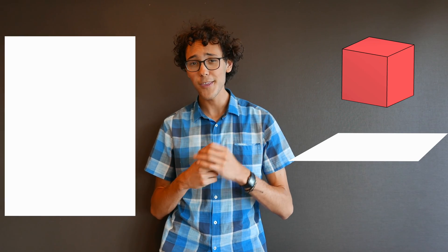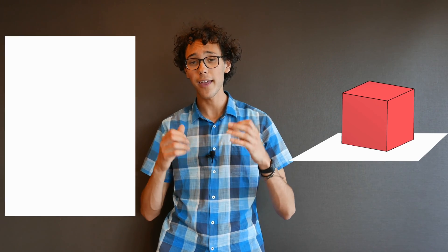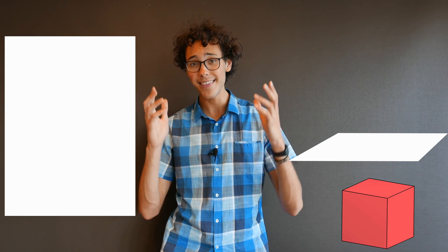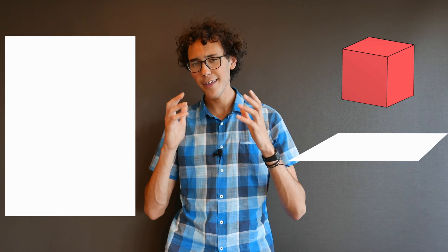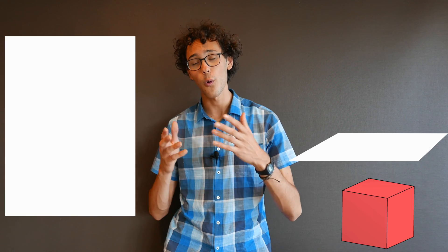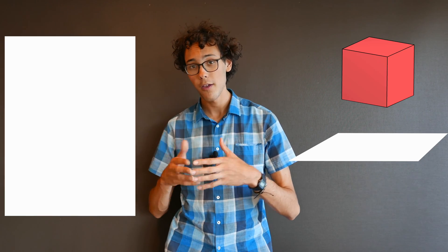First, consider a two-dimensional world — just an x and y axis. Now let's take a three-dimensional shape and move it through this two-dimensional world. If you were a little two-dimensional being, doing this would look like a square appeared and then suddenly disappeared. Essentially, you're seeing individual slices of a three-dimensional shape over the course of time. So you can use this information to reconstruct what the original shape looks like.